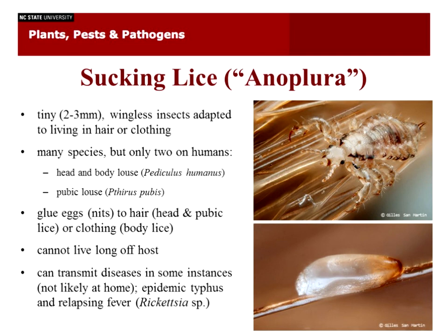Sucking lice, the Anoplura, are now known to be very specialized bark lice and book lice, although they don't look like them. These are very tiny, two to three millimeter wingless insects, very adapted to living in hair. They have well-adapted legs that grasp hair, specific to certain animals. There are many species in the world, but only two on humans: the head and body louse, Pediculus humanus, and the pubic louse or crab louse, Pthirus pubis. These all glue eggs called nits to either hair — in the case of head and pubic lice — or clothing — in the case of body lice.